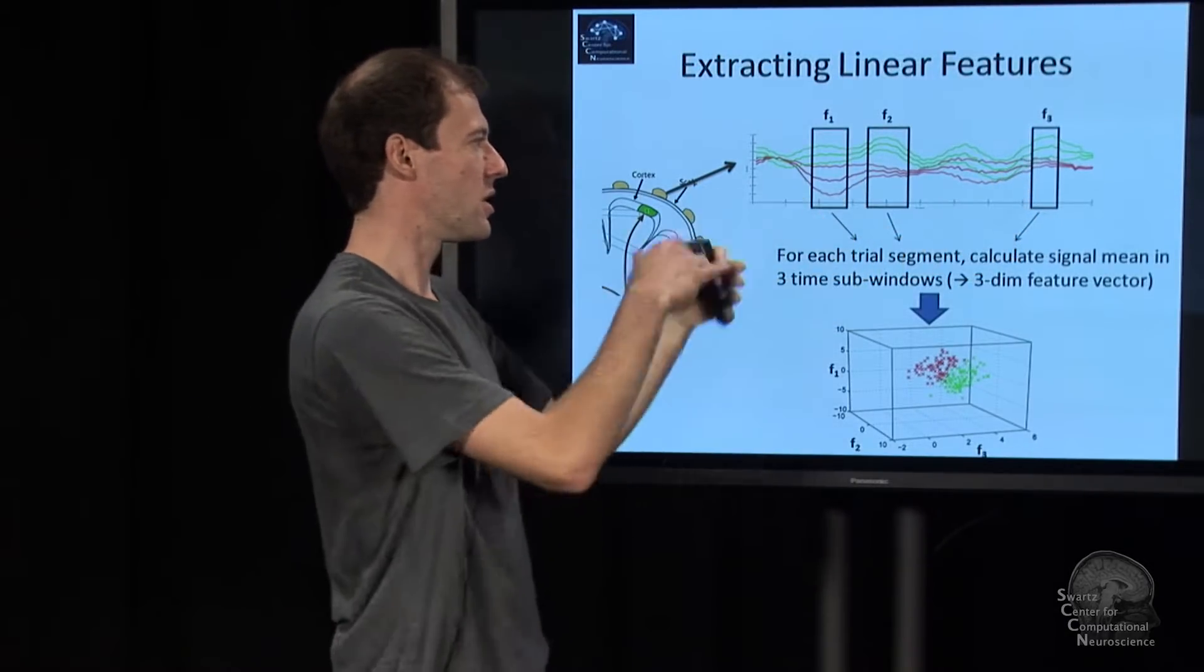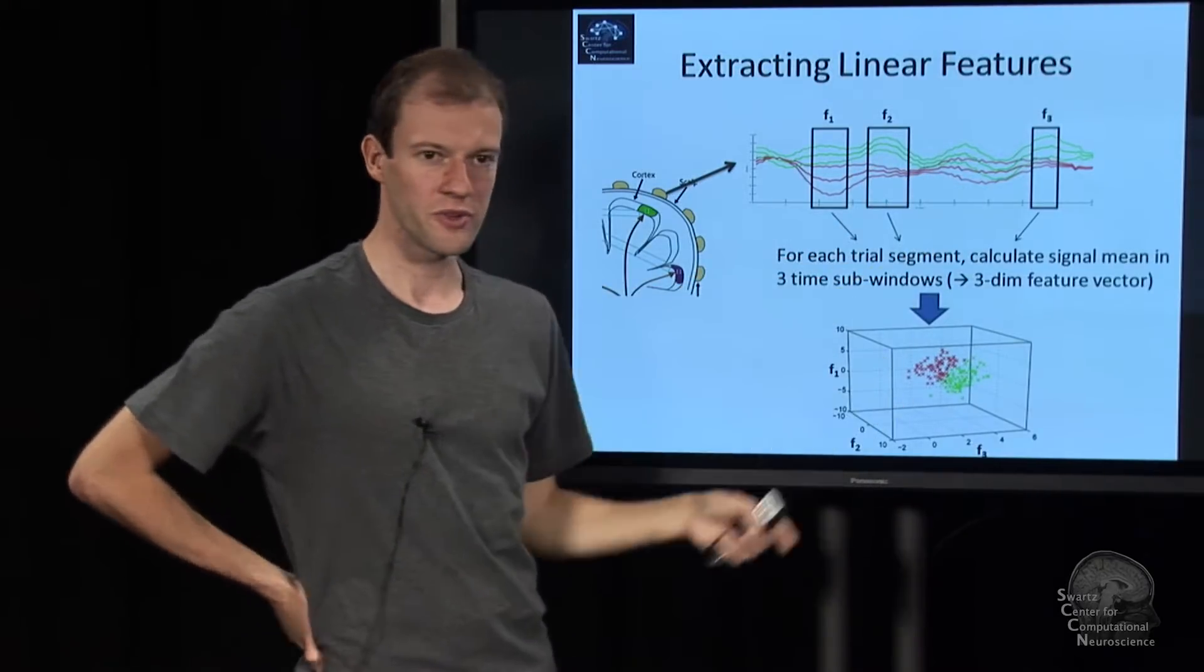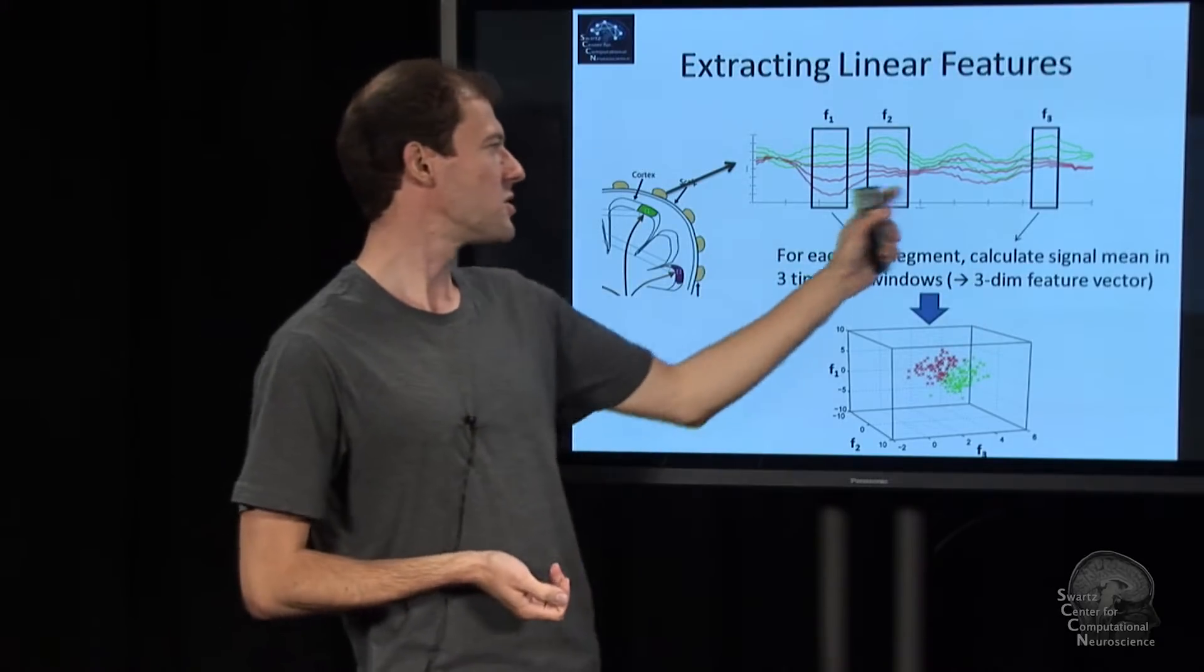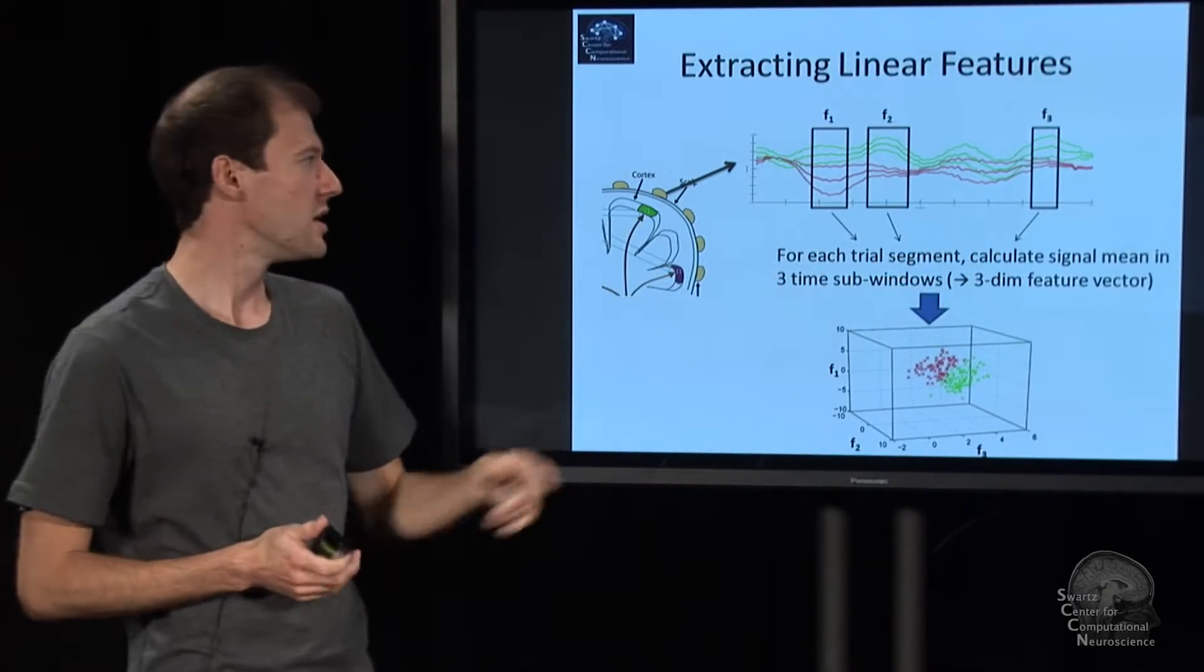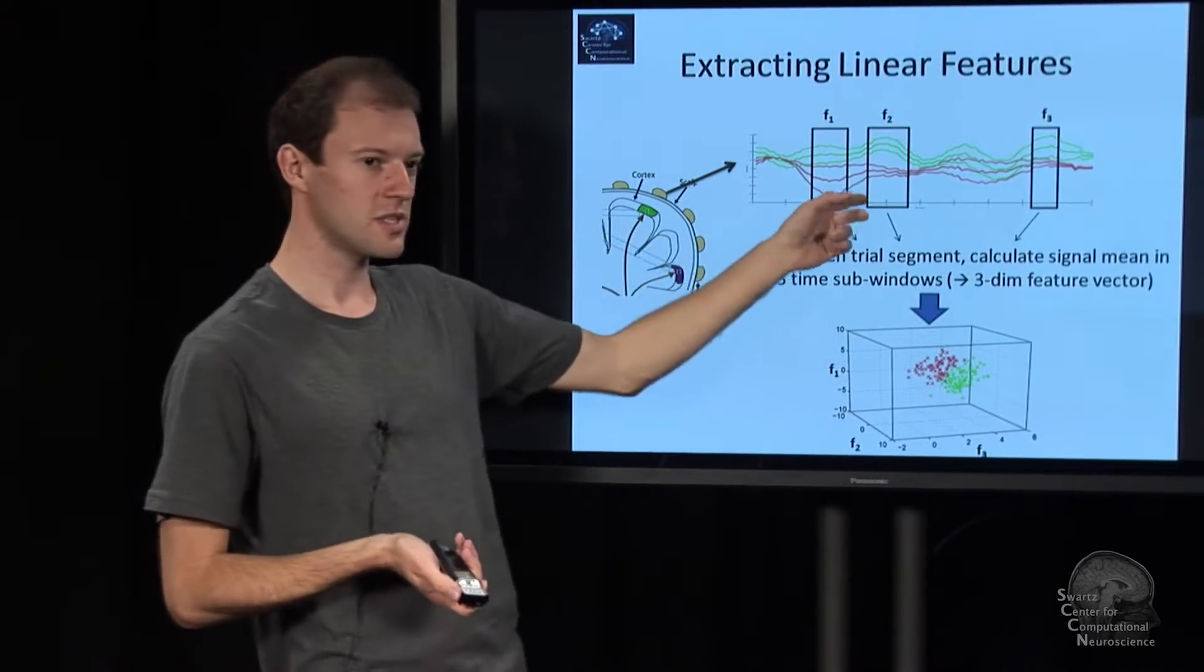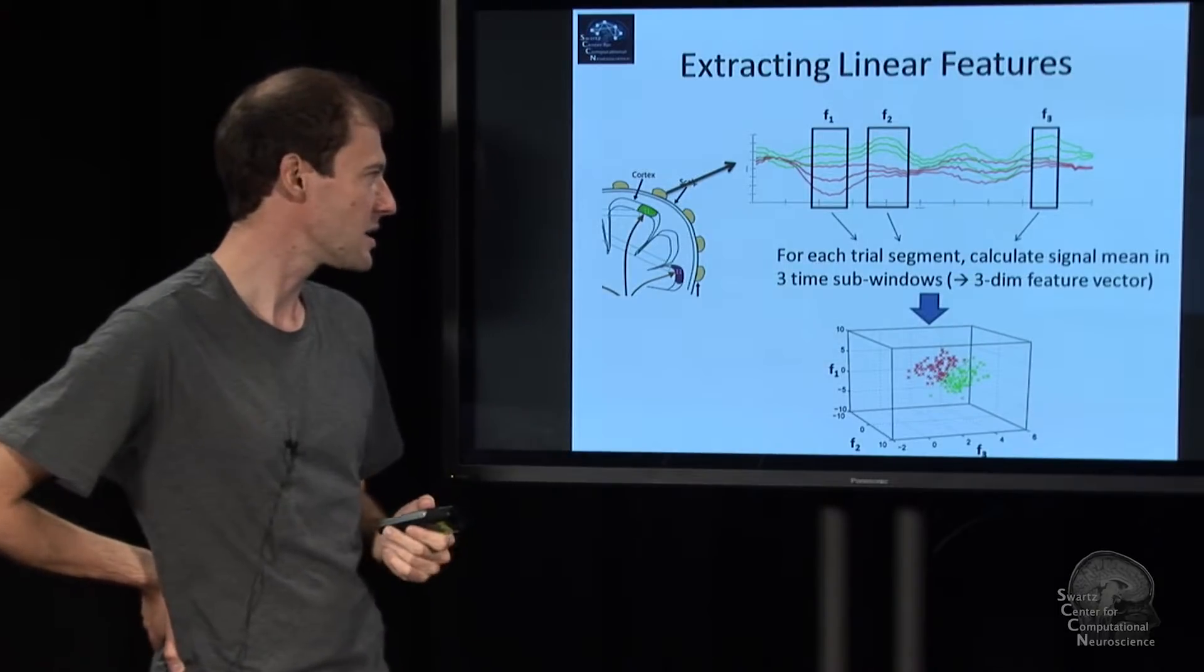There's stuff happening in between which we ignore. We reduce dimensionality quite aggressively here, trimming it down to three numbers per channel. This is one channel. We have multiple channels of course, and we do basically the same for the other channels, also for three time windows in this particular case.